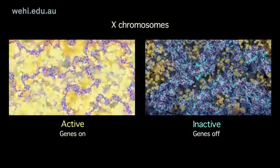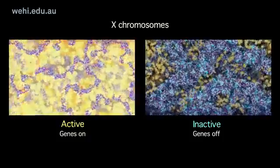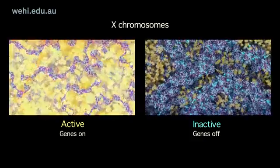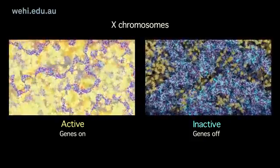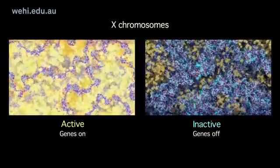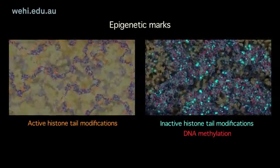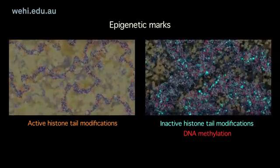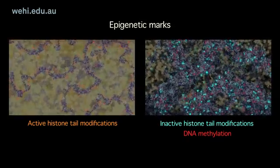Comparing the two X chromosomes directly: the active X has a dispersed or open appearance, meaning the genes on this chromosome are active, or on. The inactive X has a condensed or closed appearance, meaning that the genes on this chromosome are inactive, or off. Histone tail modifications and DNA methylation are examples of epigenetic marks — modifications that distinguish between the active and inactive chromosomes.